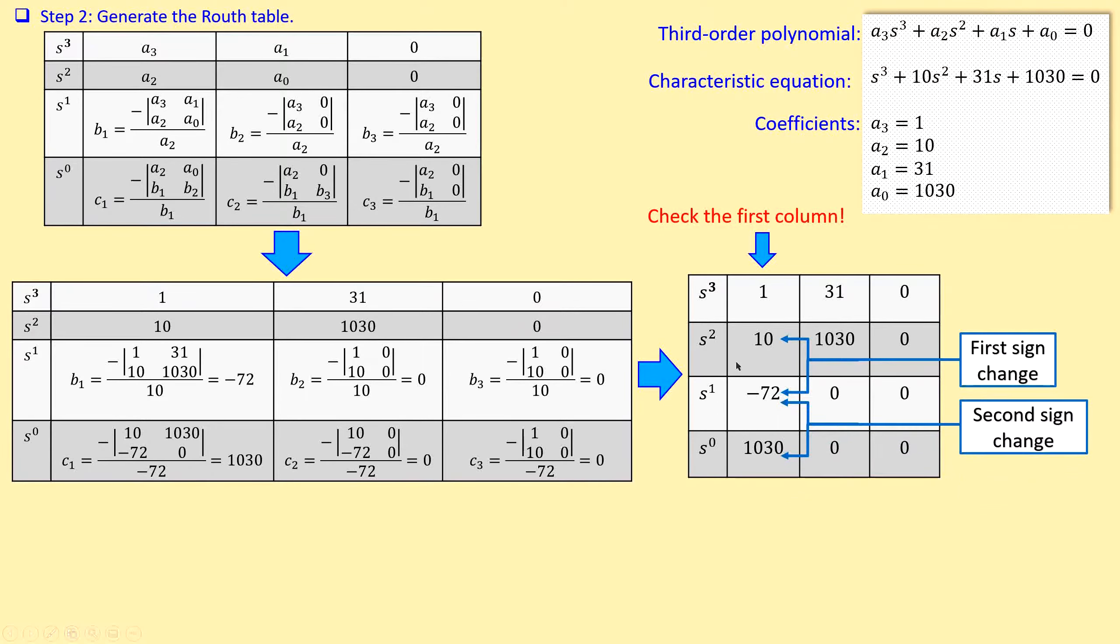We go from plus 10 to minus 72, and from minus to a plus value. It doesn't matter what actually this value is, but we see a change in the sign. We go from plus to minus and from minus to plus. I can now conclude the following.